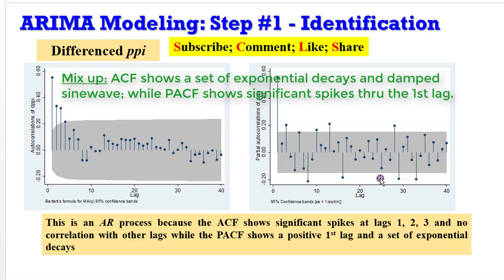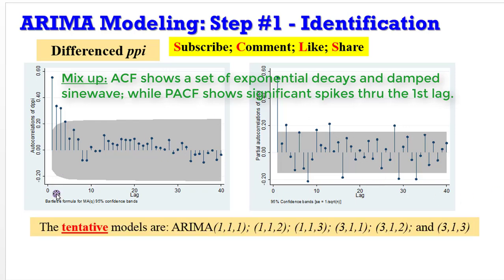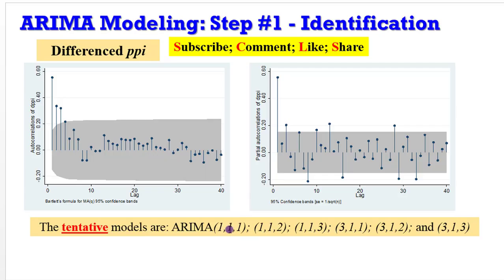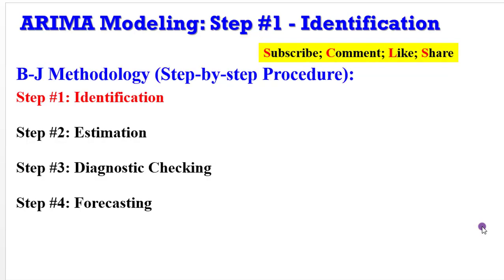Identifying the model is not straightforward and requires experience and experimentation with alternative models. The tentative models to estimate are: ARIMA(1,1,1), (1,1,2), (1,1,3), (3,1,1), (3,1,2), and (3,1,3). We are not using AR(2) because the second lag in the PACF is not significant — only AR(1) and AR(3) are considered, while for the MA process we consider lags one, two, and three.